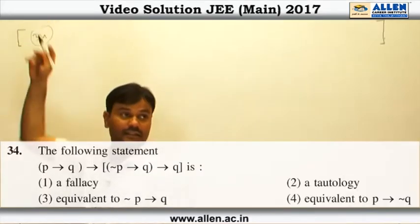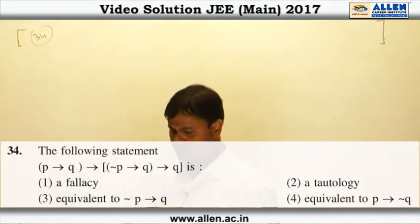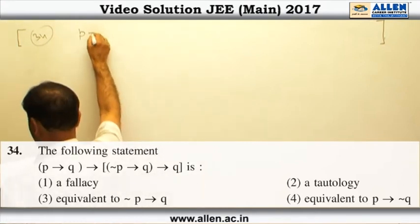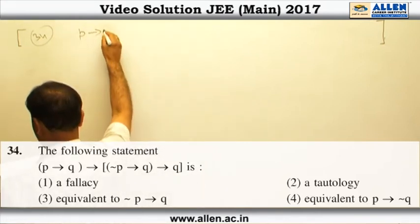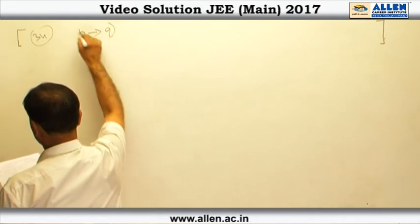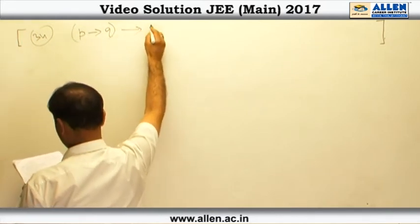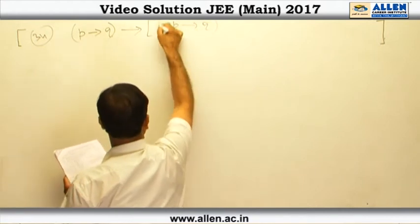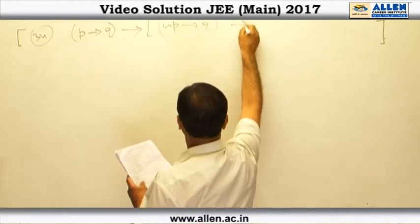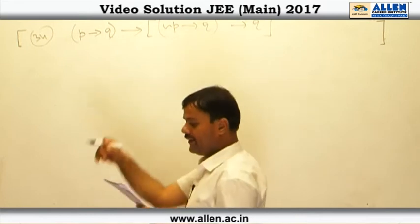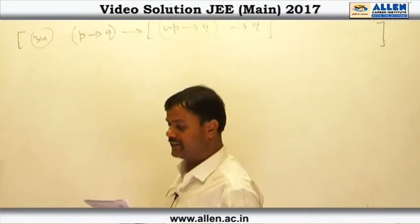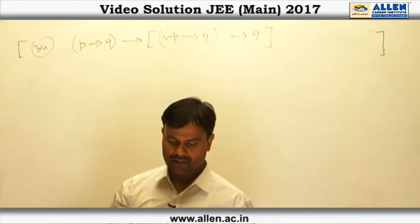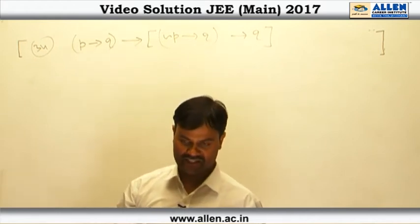Question number 34. We are given the statement: if p then q, and denial of p then q. We have to decide whether this compound statement is a tautology, a fallacy, or equivalent to some other statement.